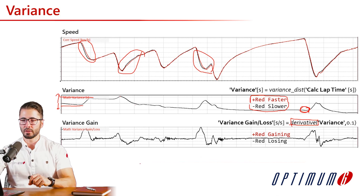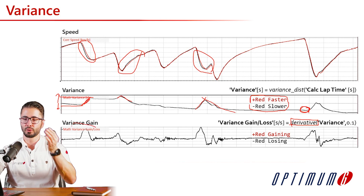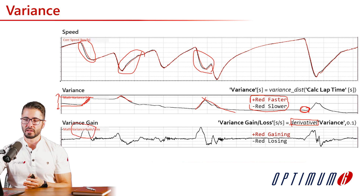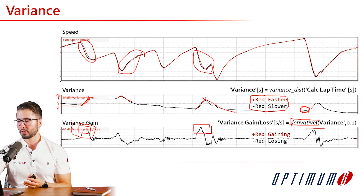Before, we needed to look at the inclination of the variance to understand if the driver was losing a lot or a little in each section. Now, instead of looking at inclination, we calculate the derivative and look at the absolute value. We can see that the red driver is gaining a lot at certain points, while the driver in black is gaining in other sections. This channel makes it very efficient to identify where we should be working with our drivers.